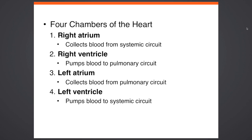The bottom two chambers are called ventricles. Ventricles pump blood out of the heart to the rest of the body. The right atrium collects blood from the systemic circuit, passes it through the valves into the right ventricle, which pumps it out to the lungs. The lungs oxygenate it and return it to the left atrium, which pumps through the bicuspid valve into the left ventricle. The left ventricle — LV — is the most important chamber.